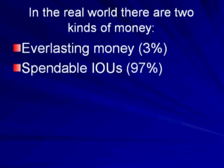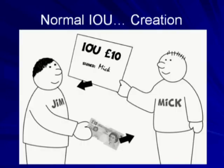The concept of a spendable IOU may sound a little odd, and in order to explain it, we should first consider the behaviour of an ordinary IOU, the kind you or I could write. Say that Mick wished to borrow £10 from his friend Jim. He could write IOU £10 on a piece of paper and hand it to Jim in return for a £10 note. It's important to note that the IOU did not exist previously — Mick did not need to obtain the IOU from somebody else. It was just created on the spot by virtue of writing it on a piece of paper.